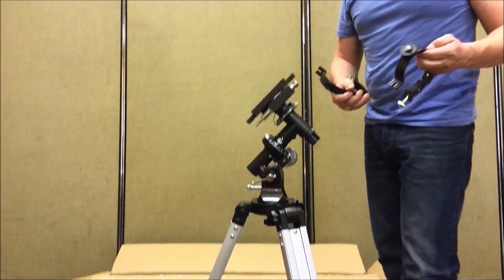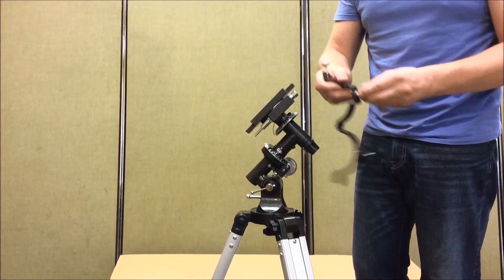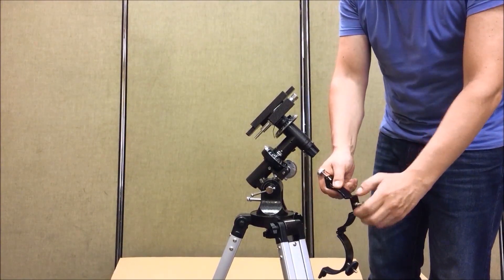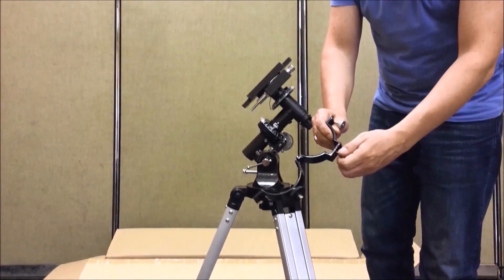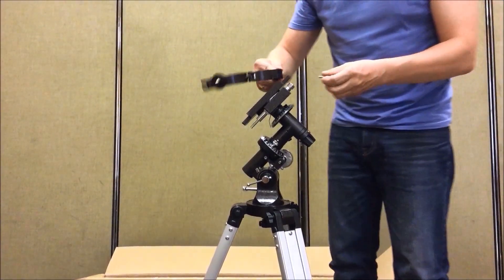First, we fasten the tube rings to the mount. For this there are special screws. We need to unscrew them, put them in the openings on the mount, and tighten them.